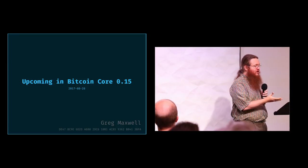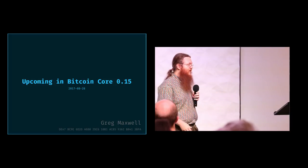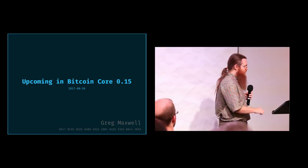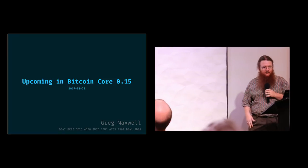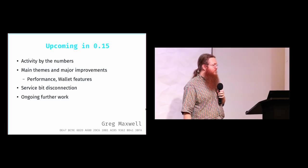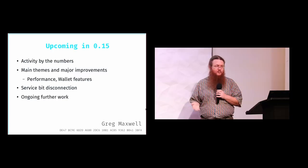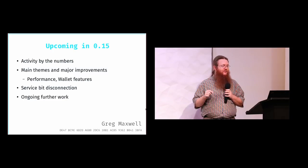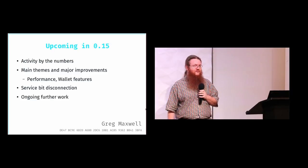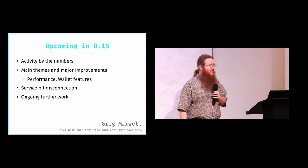Tonight I'm going to start off talking about the new cool stuff in Bitcoin Core 0.15, which is just about to be released. Then I'm going to open up for an open format, arbitrary question and answer session. I'll cover the major themes and improvements — performance, wallet features — and I'll talk about the service bit disconnection change, which is minor but created some press. Then I'll discuss future work that's not in 0.15.